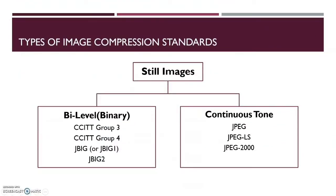The types of image compression standards: we have bi-level images and we have two kinds. One that can be represented with one bit of information, that is 0 or 1, or the grayscaled images, also called continuous tone images.